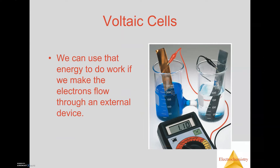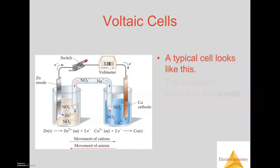Voltaic cells are also called galvanic cells — you'll hear both terms used interchangeably. A voltaic cell is basically a battery set up so that you have two different metals in a configuration to measure a charge. You can see in the picture on the right-hand side two different beakers connected together, with a voltmeter connected to them measuring a voltage. We're going to look at what a voltaic cell is in detail over the next couple of slides.